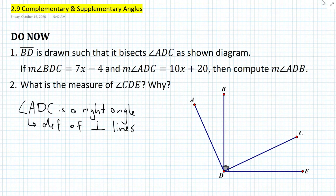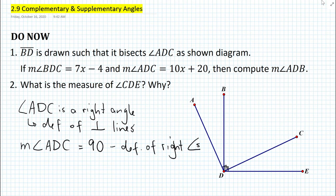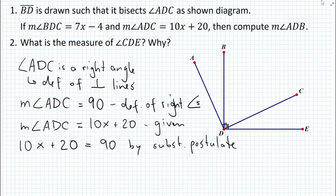Let's write this down. First, we state that angle ADC is a right angle because of the definition of perpendicular lines. As we learned previously, perpendicular lines states that two lines are perpendicular if and only if they intersect to form right angles. Then we state that the measure of angle ADC is equal to 90 because of the definition of right angles — an angle is a right angle if and only if it measures 90 degrees. Then, we state that the measure of angle ADC is equal to 10x plus 20, which is the given. And then, 10x plus 20 is equal to 90 by the substitution postulate.